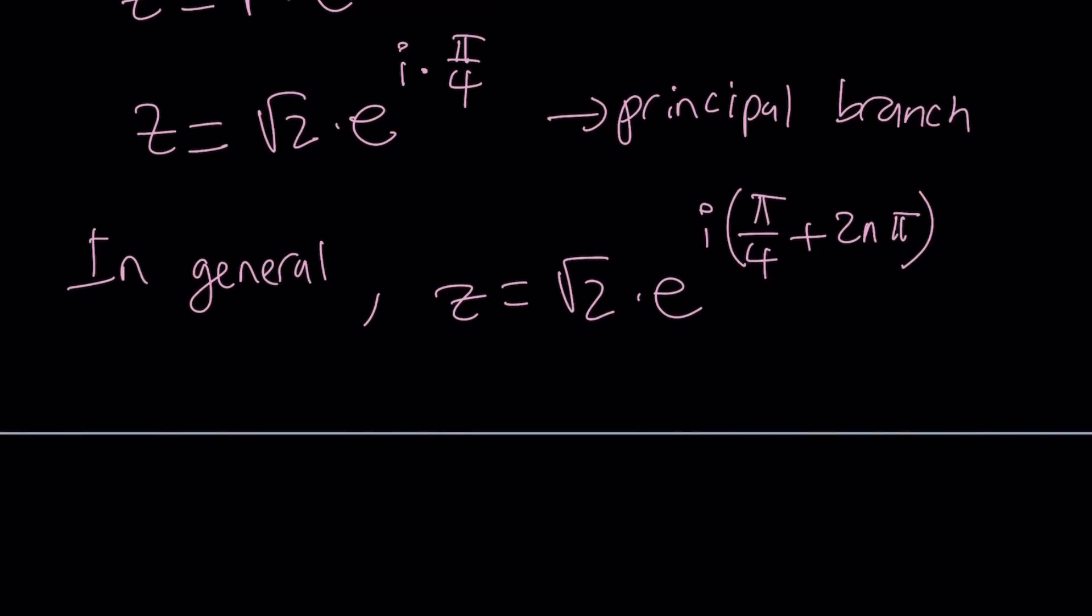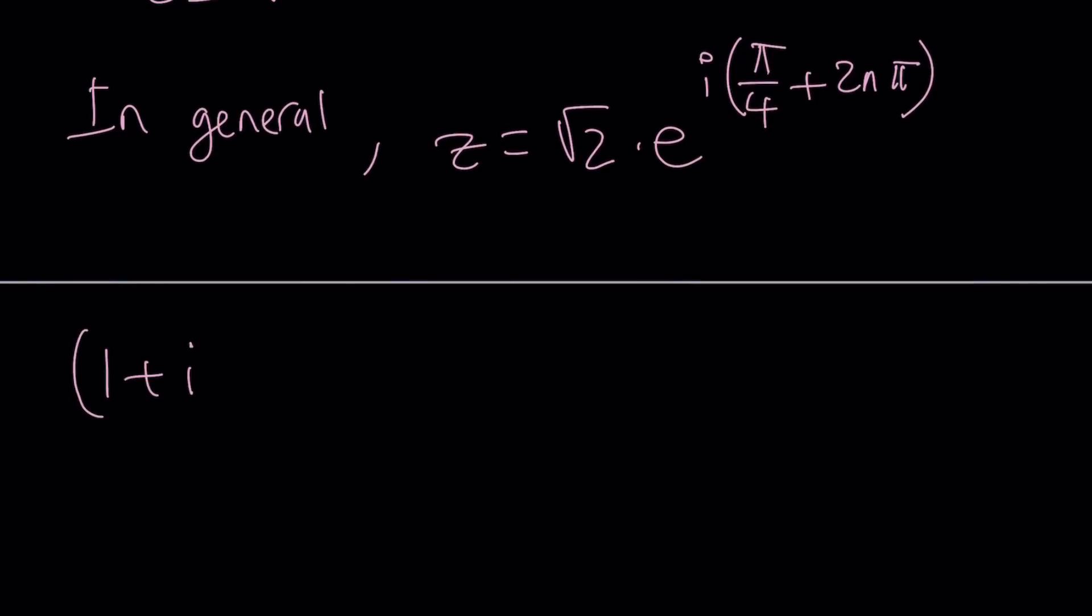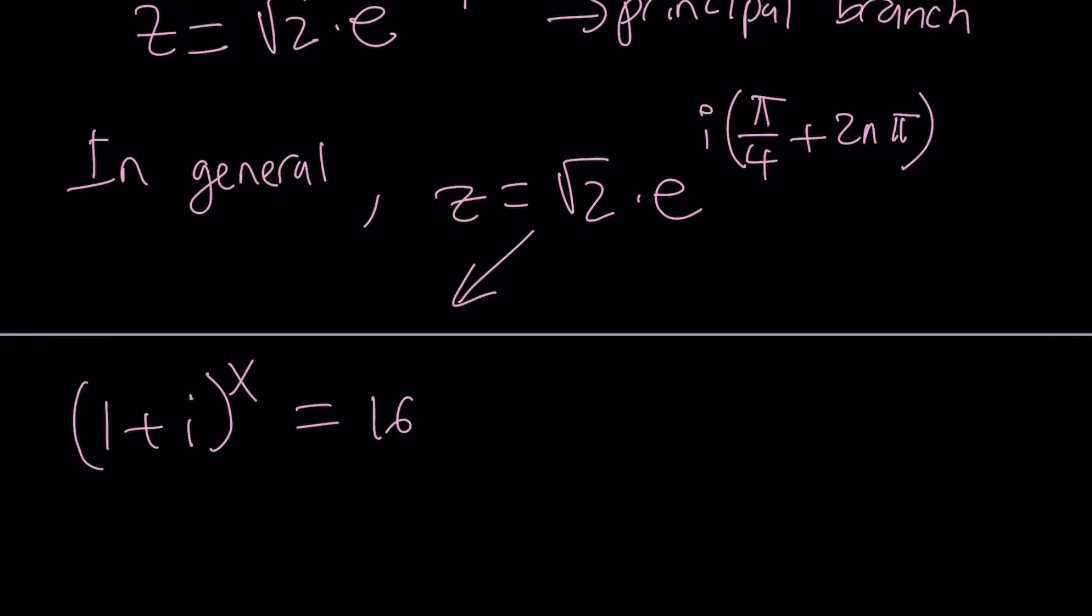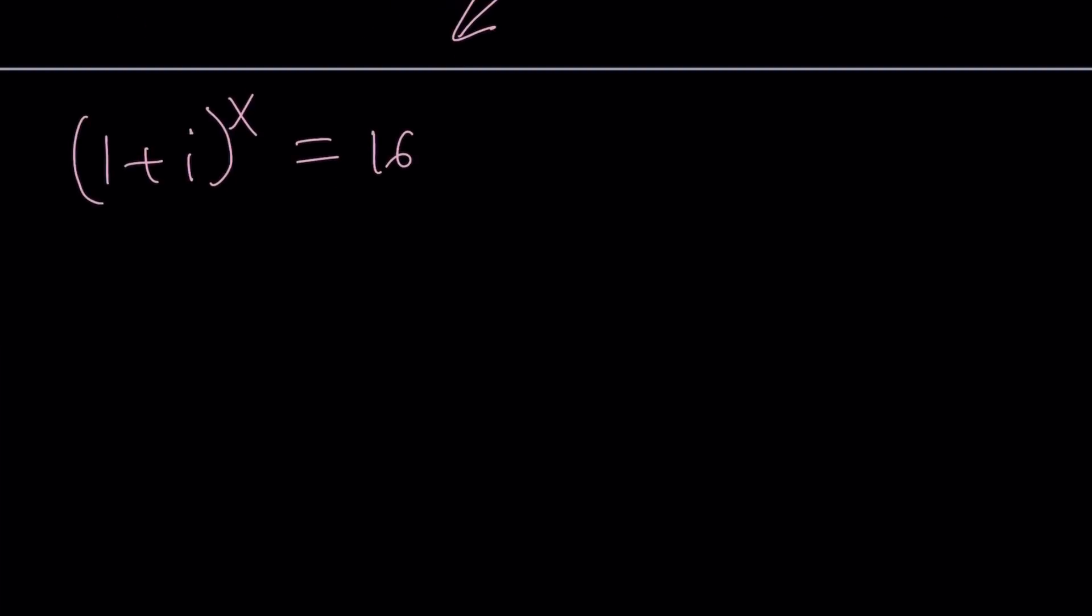Let's plug it in. Now we have (1 + i)^x = 16. I'm going to replace my 1 + i with this expression. By the way, ginormous is not a real word, but they just made it a word. So let's replace z with that: √2 times e^(i(π/4 + 2nπ)).